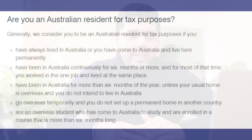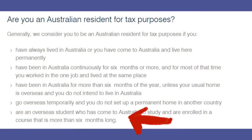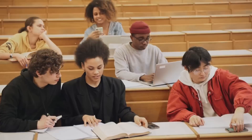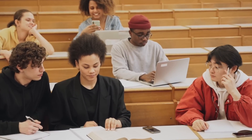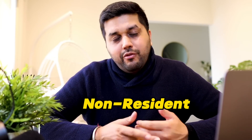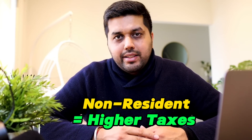On the ATO's website, it's clearly mentioned that if you are an international student in Australia coming to study for a course which is 6 months or longer, then you are considered a resident in Australia for taxation purposes — which is a good thing because you effectively pay less taxes. However, if you are studying for a course shorter than 6 months and you are planning to leave before 6 months, then you will be considered a non-resident, which means you will be paying higher taxes, unfortunately.